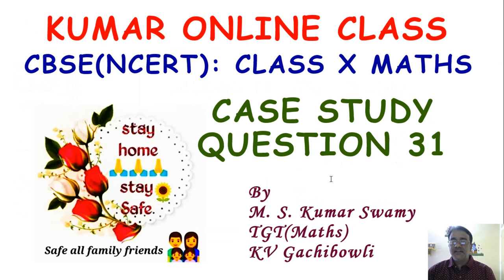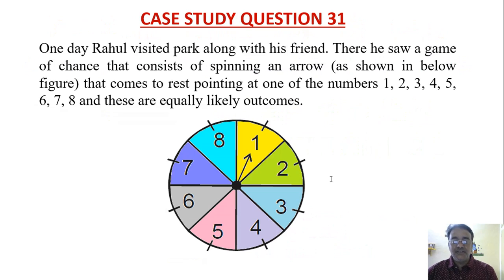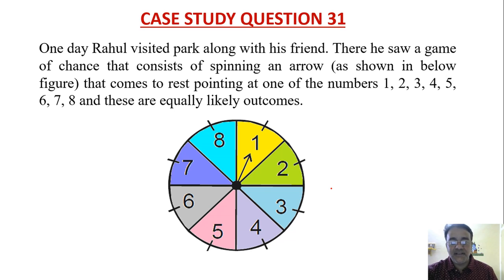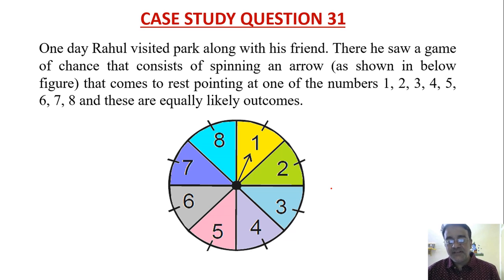Now we are going to start case study question number 31, and this case study is based on the probability chapter. One day Rahul visited a park along with his friend. There he saw a game of chance that consists of spinning an arrow, as shown in the figure below, that comes to rest pointing at one of the numbers 1, 2, 3, 4, 5, 6, 7, 8, and these are equally likely outcomes. So based on this, some questions are framed.